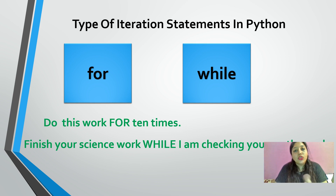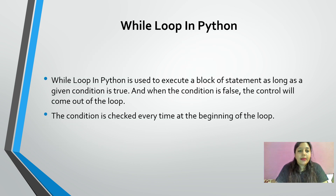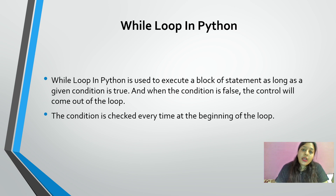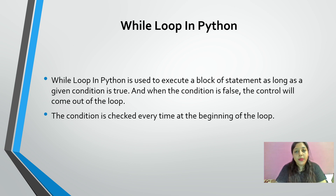While loop in Python is used to execute a block of statements as long as the given condition is true, and when the condition is false the control comes out of the loop. The condition is checked every time at the beginning of the loop. As soon as you come out of the loop, condition checking and repetition are both stopped.